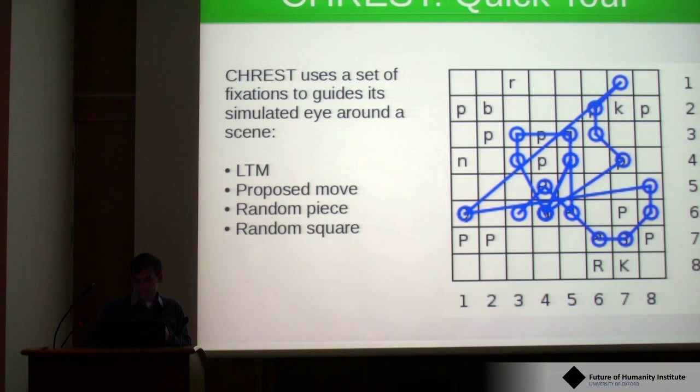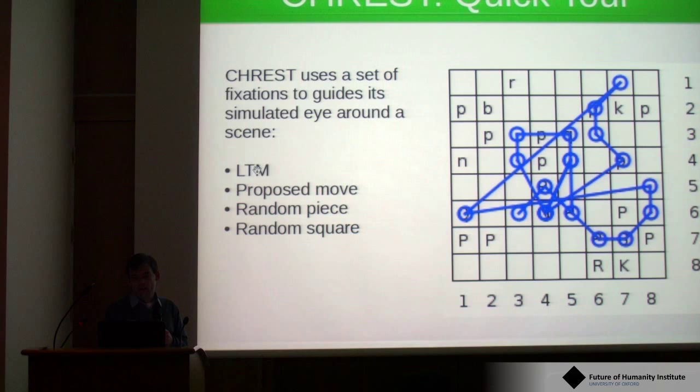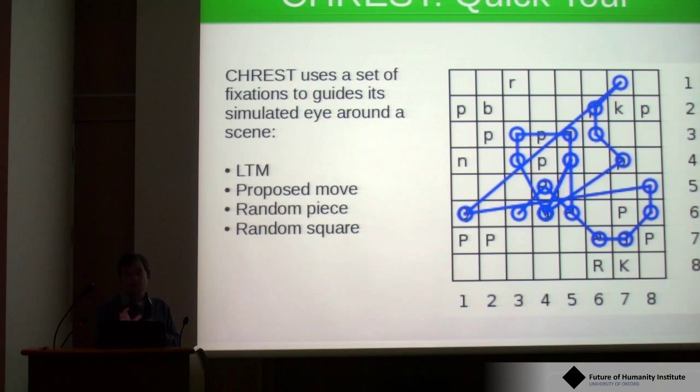Now the simulated eye: on the right here is a chess board and the trace pattern of the eye moving across the chess board. The eye uses a collection of heuristics, combining top-down with bottom-up heuristics. The key top-down heuristic is attention to memory — when the model has a large amount of information learned, when it locates some information it will try to complete that information with other information it expects from its memory.